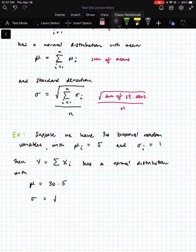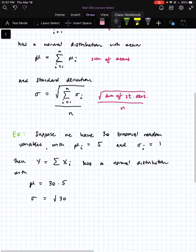And the standard deviation is going to be the square root of the sum, so adding up 1 thirty times, so the square root of 30 divided by n, which is 30.